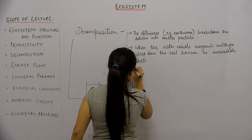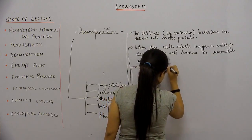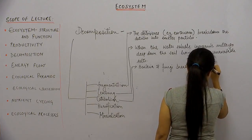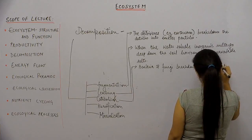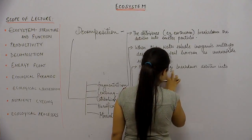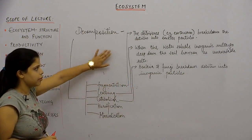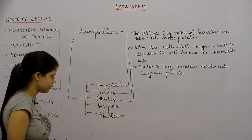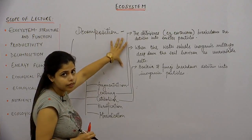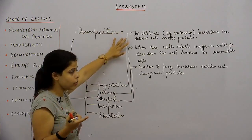What is catabolism? Bacteria and fungi break down detritus into inorganic particles. It is known as catabolism. It is to be remembered that all these three processes — fragmentation, leaching, and catabolism — are going on simultaneously on the detritus; they work together at the same time.